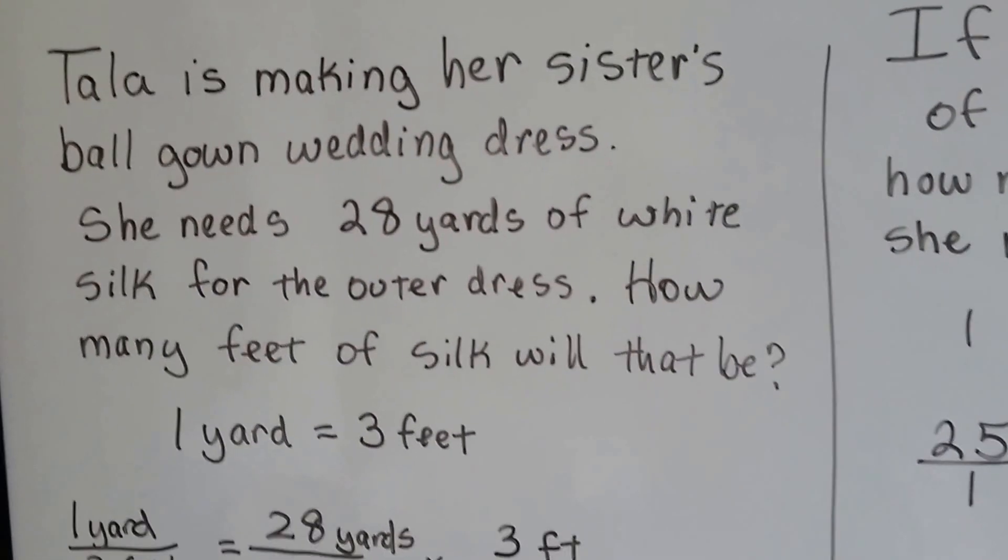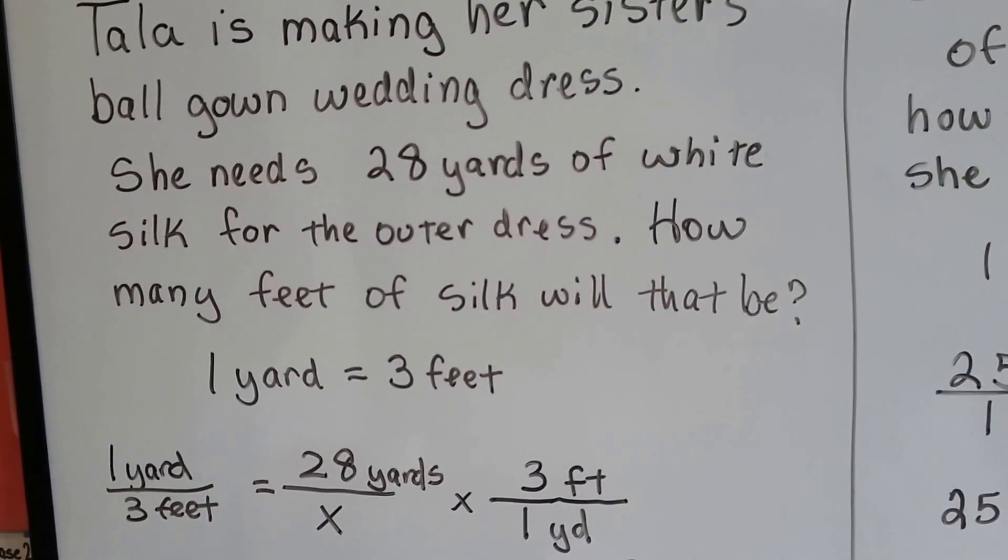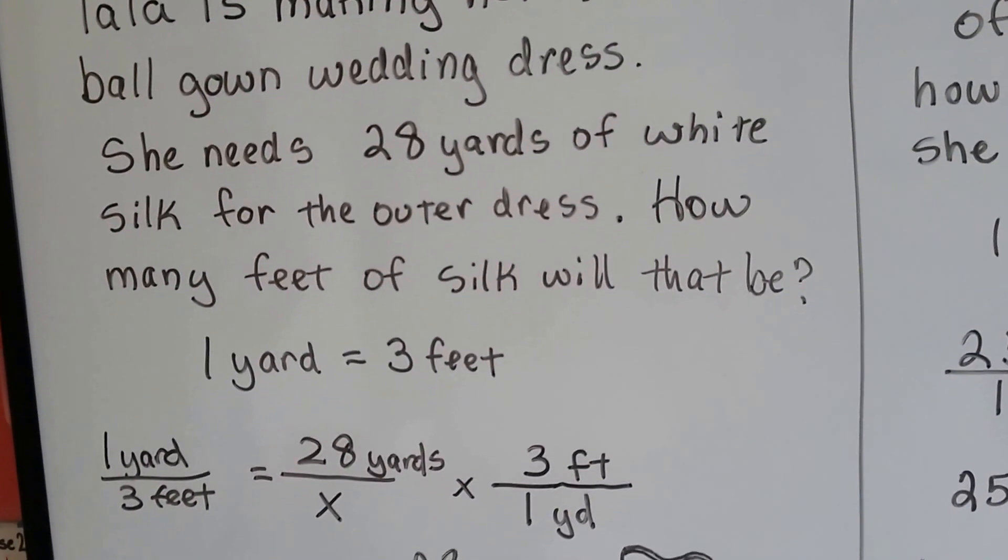Tala is making her sister's ball gown wedding dress. She needs 28 yards of white silk for the outer dress. How many feet of silk will that be?